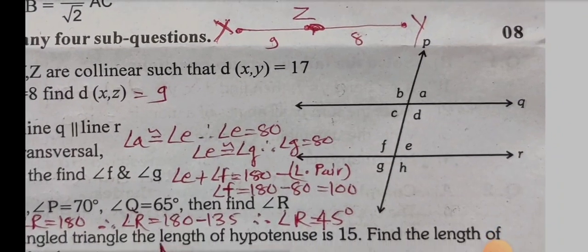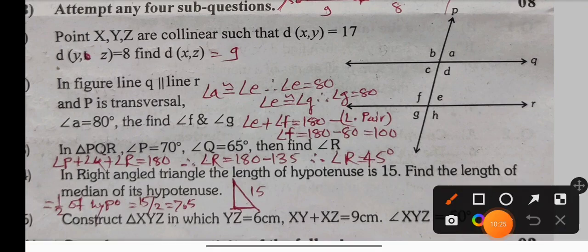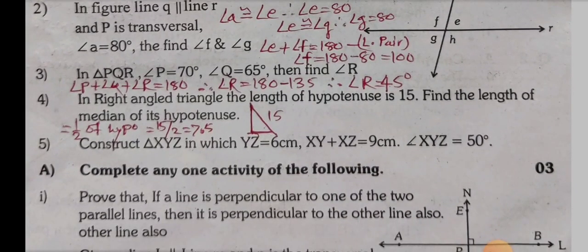Sub-question 2: In the figure, lines Q and R are parallel and P is the transversal. Angle A is congruent to angle E because they are corresponding angles. Therefore if angle A equals 80, then angle E equals 80. Angle E plus angle F equals 180 (linear pair), so angle F equals 180 minus 80 equals 100.